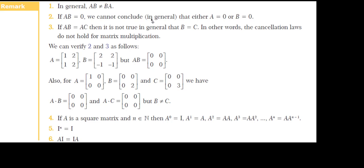We are going to continue with the second lesson on multiplication of matrices, where we study the properties and powers of square matrices. In general, A times B is not equal to B times A. However, there are specific cases where they may be equal: if A is equal to zero, A is equal to B, or B is the identity matrix.